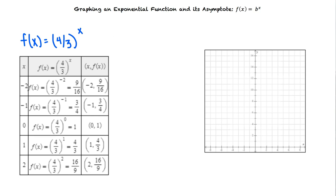Now that we've found our points, we can plot them on the graph. Next, we need to draw the horizontal asymptote. As we mentioned before, functions of the form f of x equals b raised to the x have a horizontal asymptote at y equals 0, the x-axis.